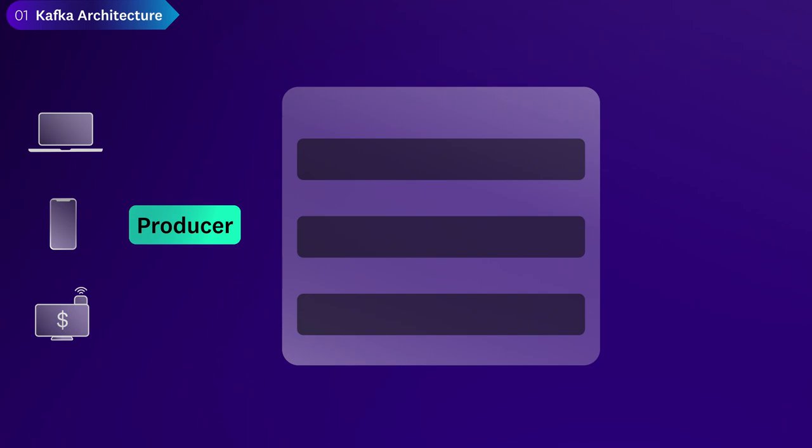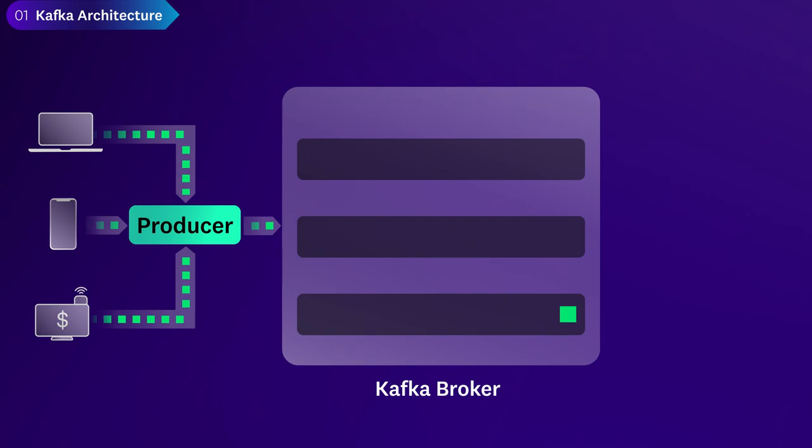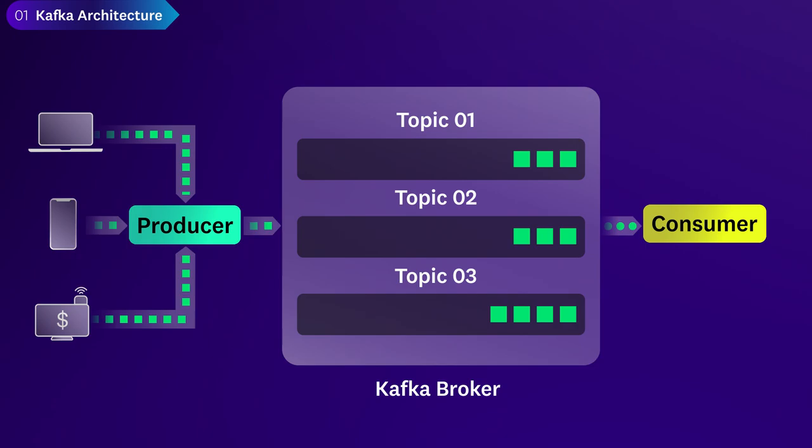Applications that send the message stream into Kafka are called producers. Kafka servers, called brokers, receive the stream and write the messages sequentially to immutable log files. Messages with similar traits may be categorized into groups called topics. Applications called consumers subscribe to topics and process the messages.